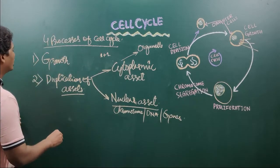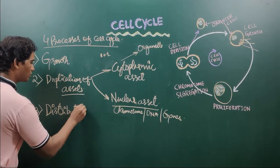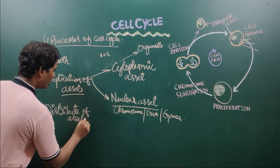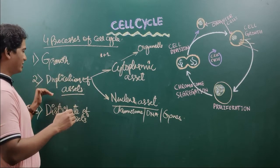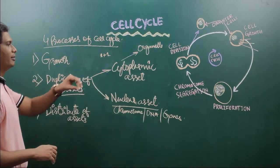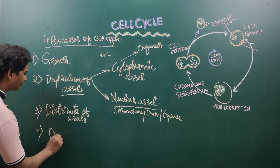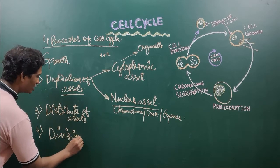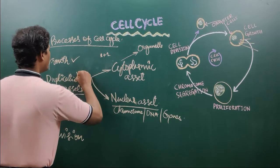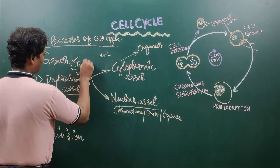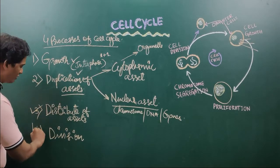After duplicating the assets, the third process is distribution of assets. Here, the cell distributes all the assets to the daughter cells which arise by proliferation. Growth and duplication of assets occur in interphase, and distribution of assets and division occur in M phase.